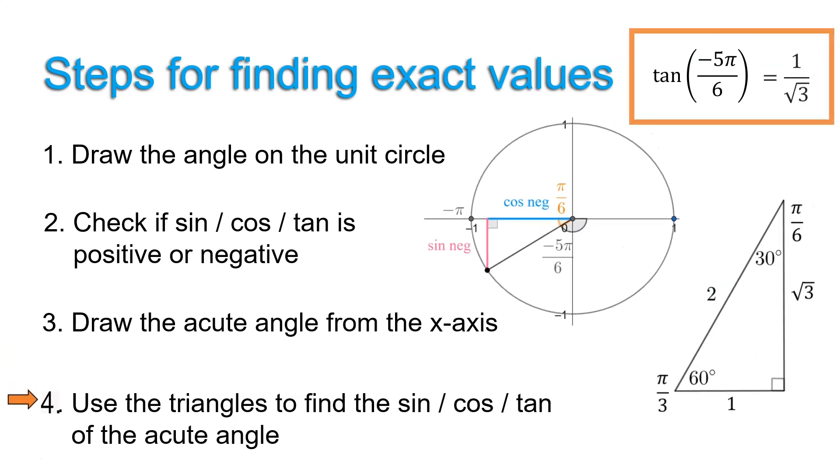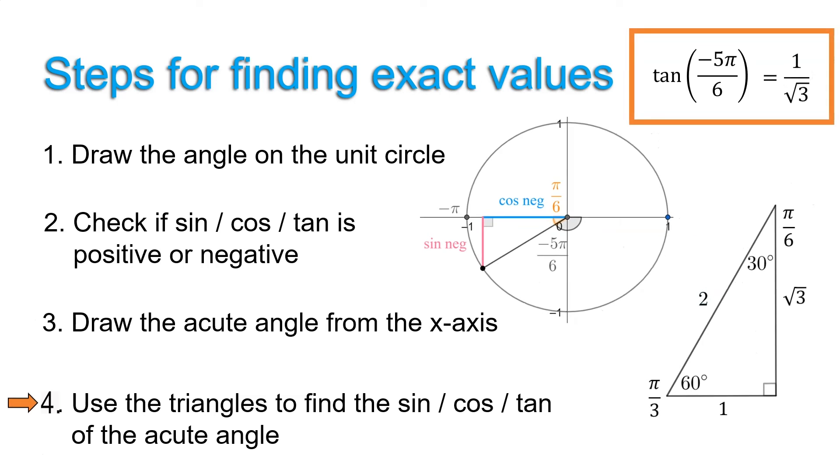Okay, because it's the difference between pi and 5 pi over 6. So that difference is pi over 6. Step 4, triangles please. Tan pi over 6 is 1 over root 3, so tan of negative 5 pi over 6 is also 1 over square root 3. Easy, right?